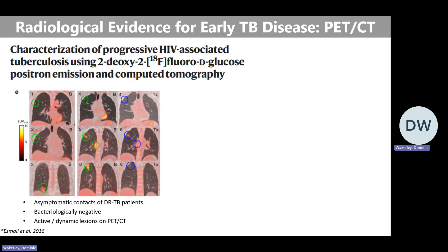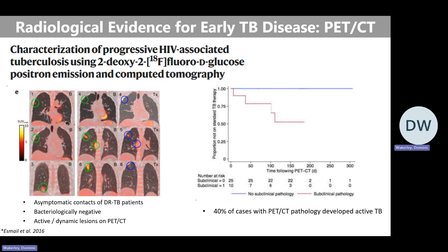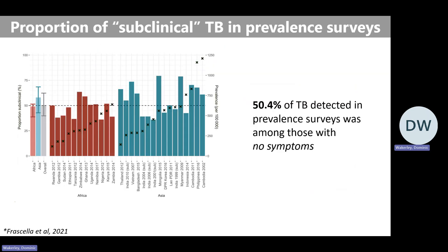So why do we think this no longer works? Building on Hanif's PhD, they looked at asymptomatic contacts of drug-resistant TB patients. These individuals didn't have any symptoms. They were bacteriologically negative, but they had several active dynamic lesions on PET-CT imaging, which progressed over time — some regressed, some advanced. When followed over time, around half of them ended up developing active TB disease, compared to a control cohort with no lesions where nobody developed active TB.